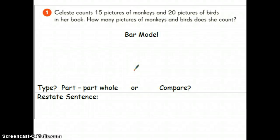This video is going to explain how to use bar models using the operation addition. The first word problem we have here is Celeste counts 15 pictures of monkeys and 20 pictures of birds in her book. How many pictures of monkeys and birds does she count?